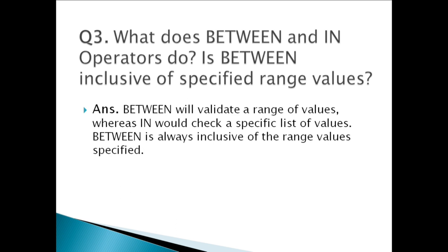Question three: What does the BETWEEN and IN operators do? Is BETWEEN inclusive of specified range values? BETWEEN will validate a range of values, whereas IN checks a specific list of values. BETWEEN is always inclusive of the range values specified. For example, if you use BETWEEN for the range 40 to 80, both 40 and 80 will also be included in the check.